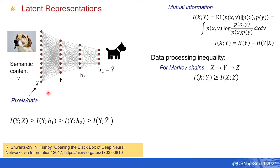Applying this to deep neural networks: as information is processed through layers, it cannot be created. Yet we can squash data down and produce representations that retain a lot of the original semantic information. What deep neural nets are really doing is progressively removing redundant information as we go forward through the layers. There are clear connections with rate-distortion theory here.